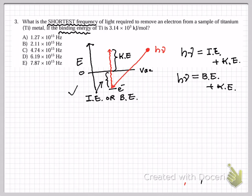What about the second one? This is the question: what will be the shortest frequency of light to remove the electron? In that case, I'm shining light with that certain frequency, and that energy will be used just to take the electron out of the surface.